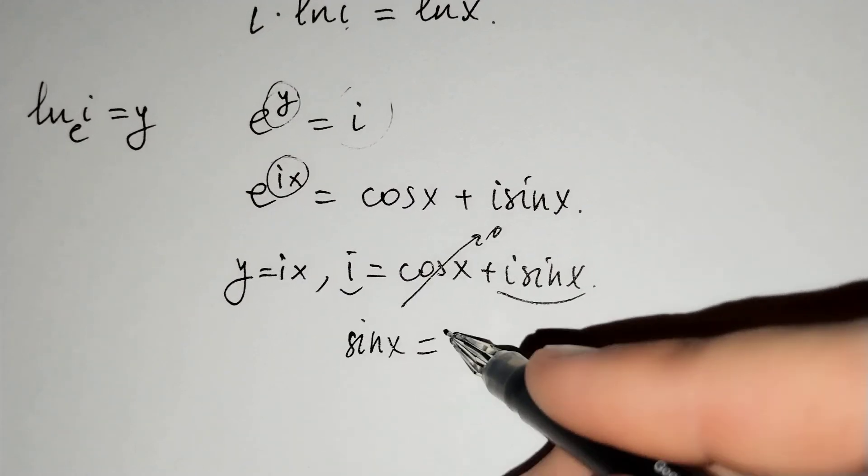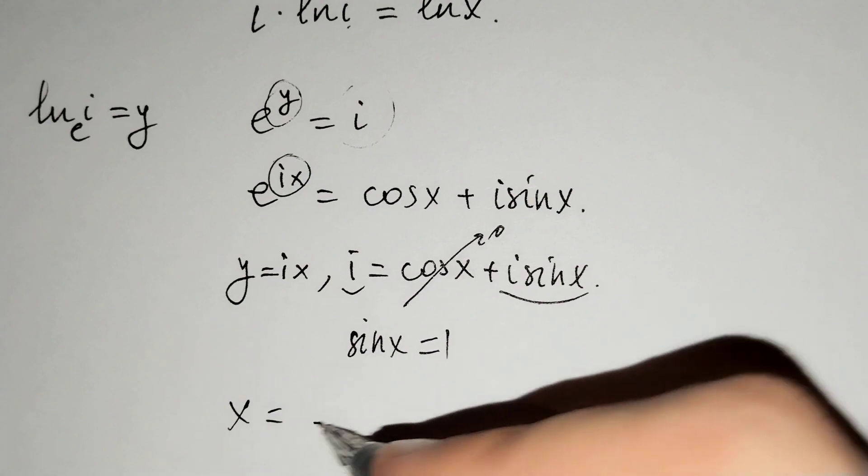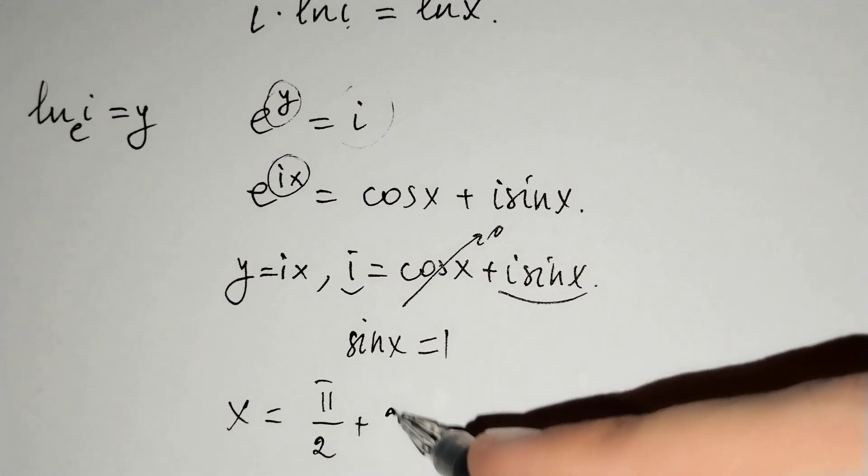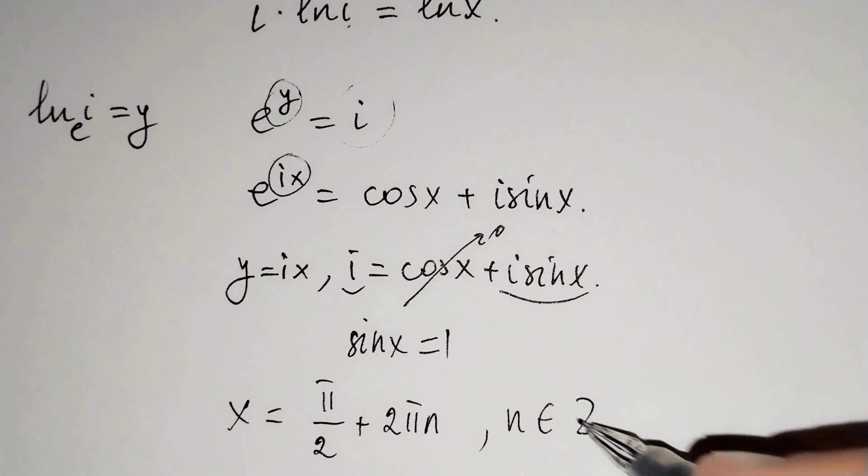From this equation, sine x equals one and x equals pi over 2 plus 2 pi n, where n belongs to integers.